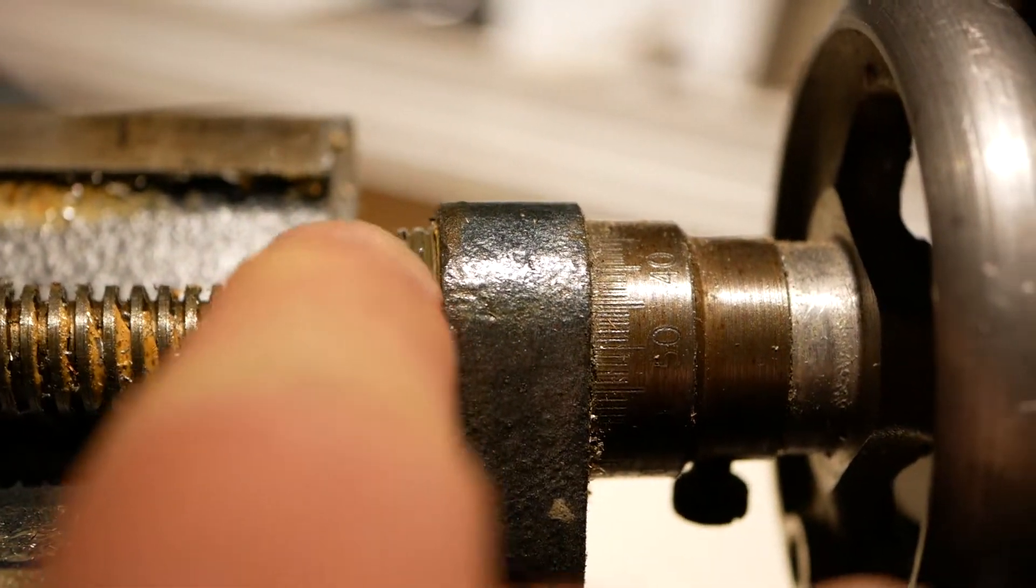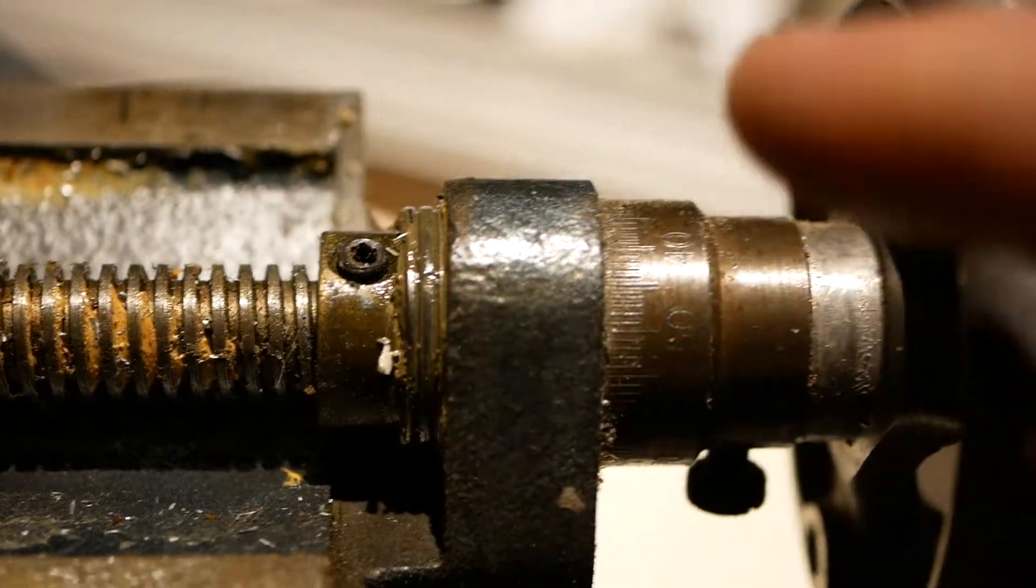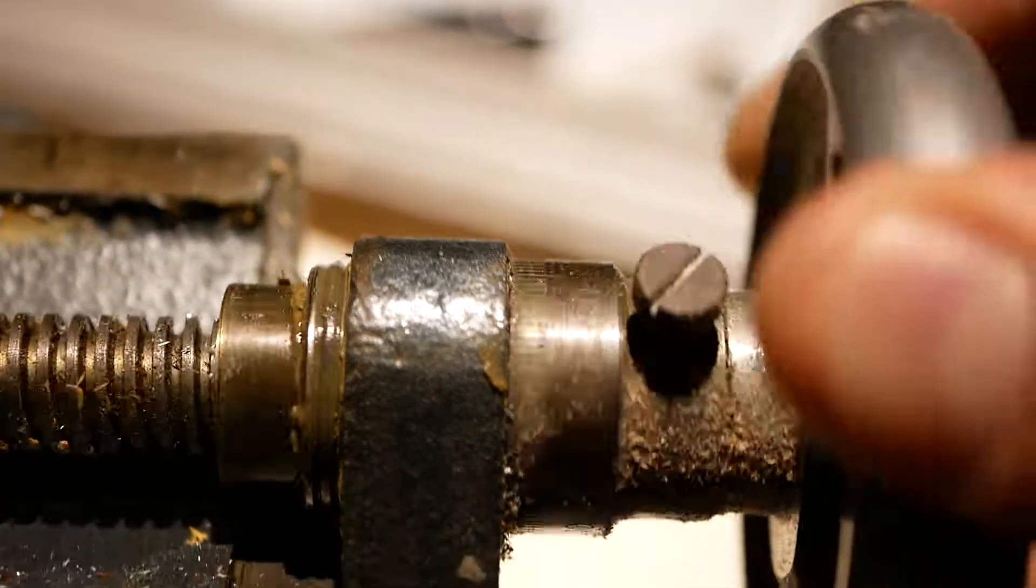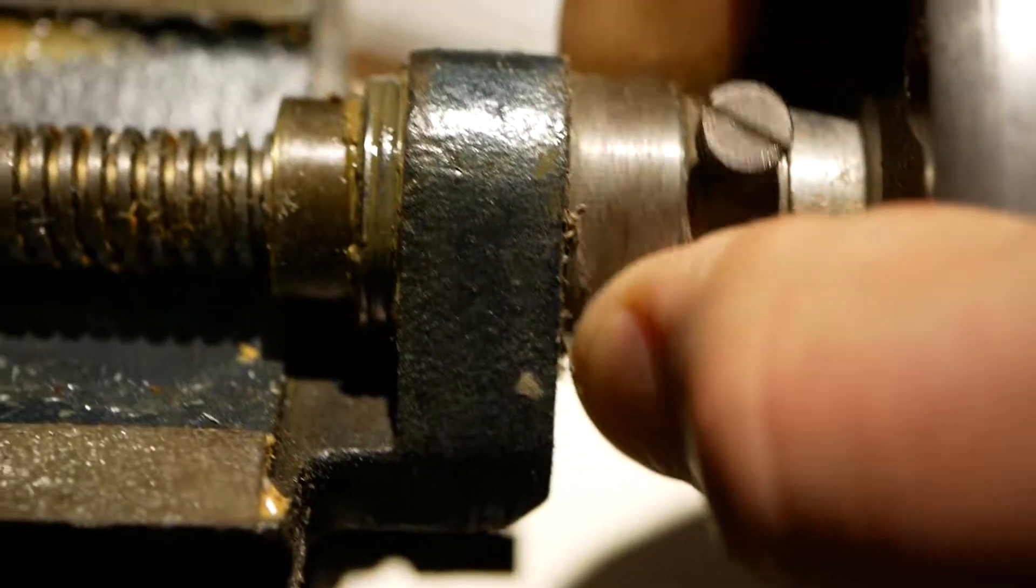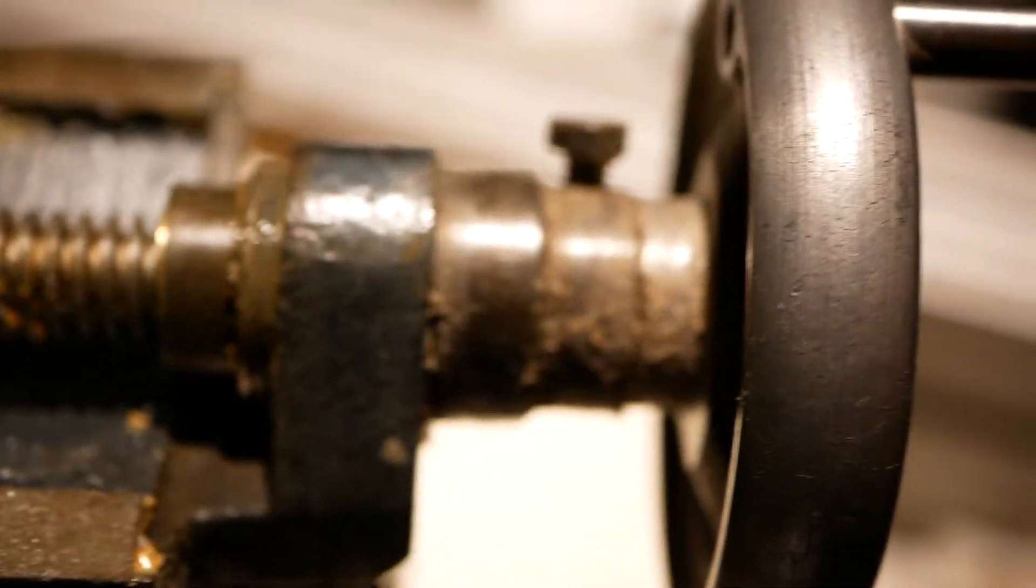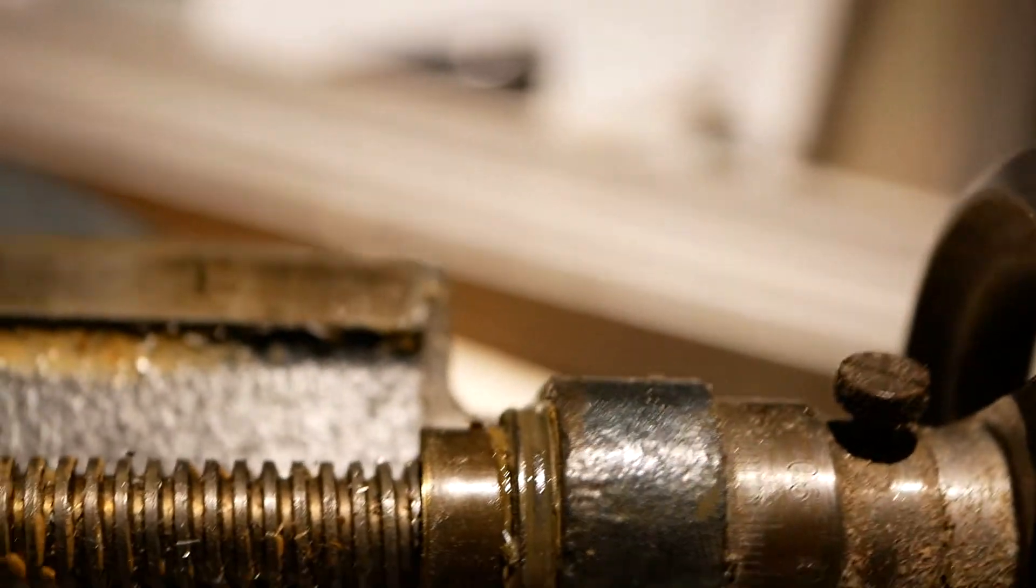Right behind it is two hardened washers with a thrust bearing between them in a cage and up underneath this increment ring here, which if I loosen this off, you can see it turns, but it's got enough tension on it to follow the knob around.